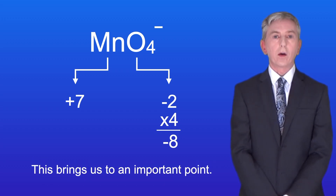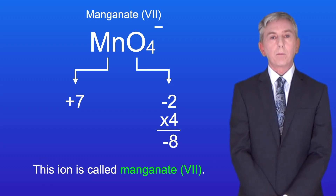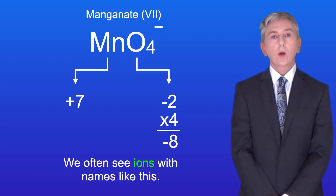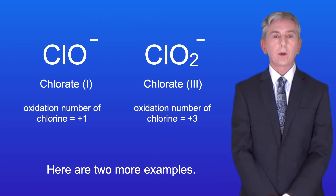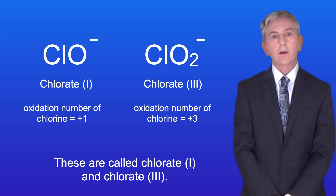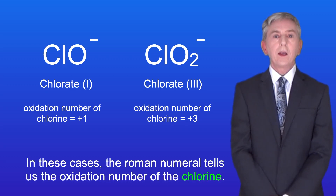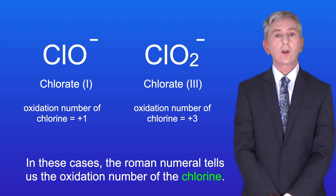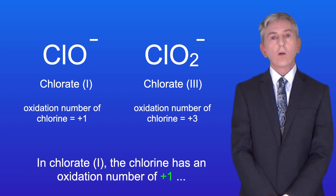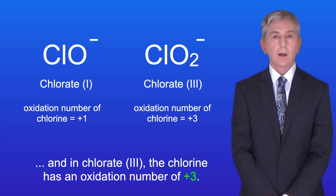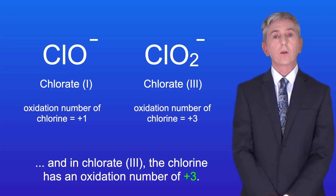This brings us to an important point. This ion is called manganate seven, and we often see ions with names like this. The Roman numeral tells us the oxidation number of the manganese. Here are two more examples — these are called chlorate one and chlorate three. In these cases, the Roman numeral tells us the oxidation number of the chlorine. In chlorate one, the chlorine has an oxidation number of plus one, and in chlorate three, the chlorine has an oxidation number of plus three.